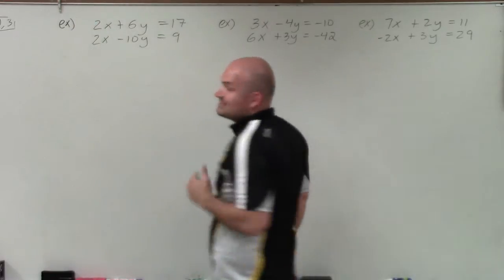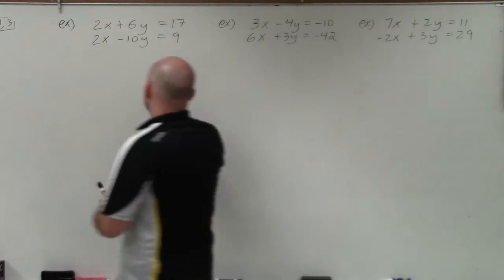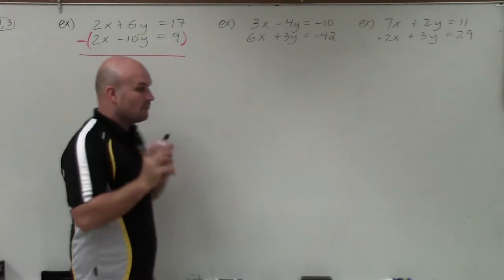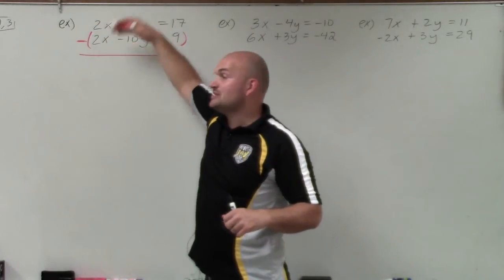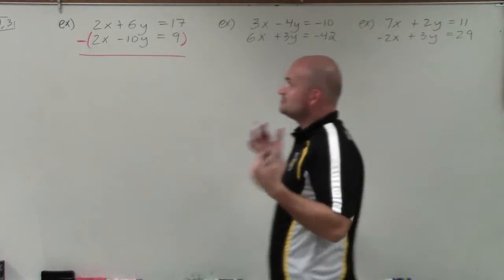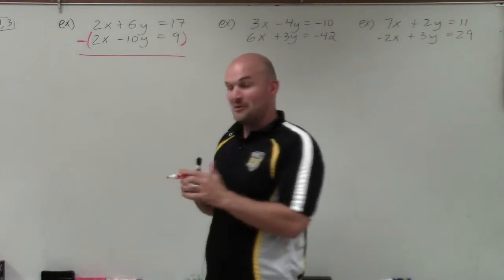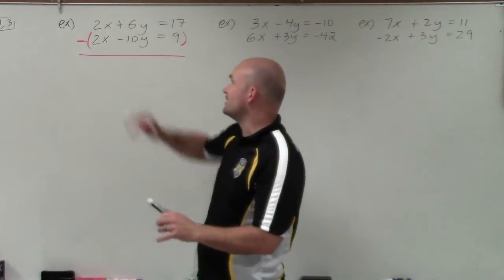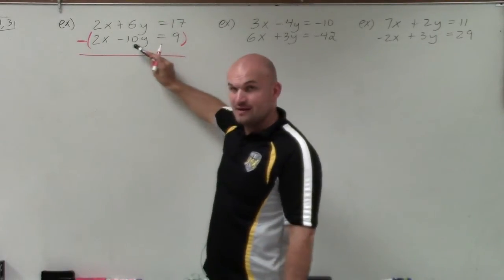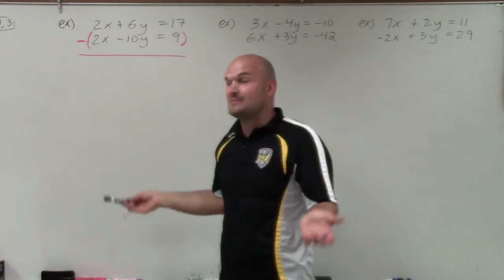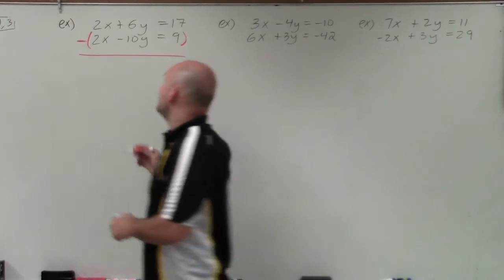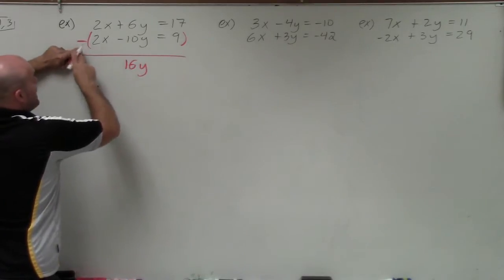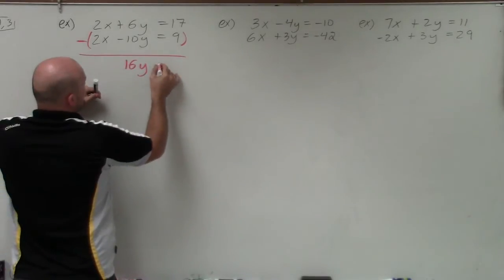You can see here the variables for x have the exact same coefficient. So when they're exactly the same, I'm simply going to subtract the two equations. The reason I don't like subtraction is that a lot of students make mistakes. Remember, you're subtracting the bottom equation from the top equation — every single term. So I'll do 2x minus 2x, which is 0x, just 0. Then 6y minus negative 10y — minusing a negative is the same as addition — so 6y plus 10y gives 16y. And 17 minus 9 gives us 8.